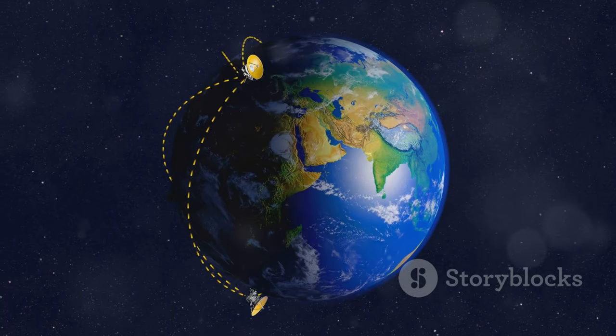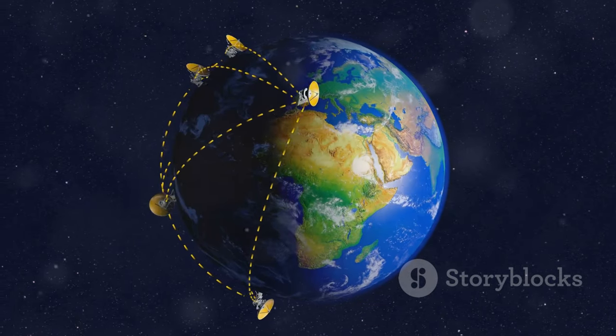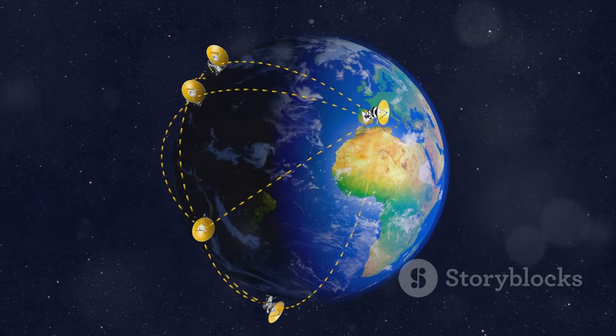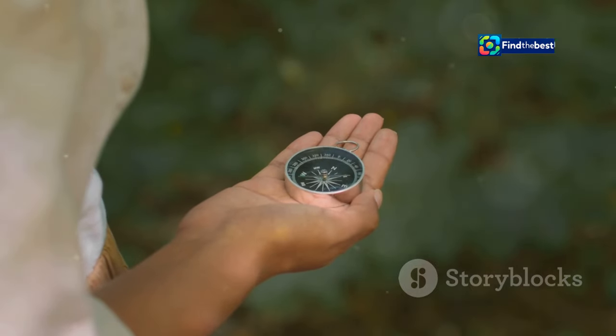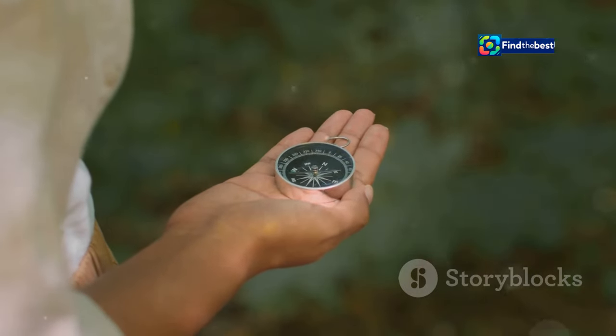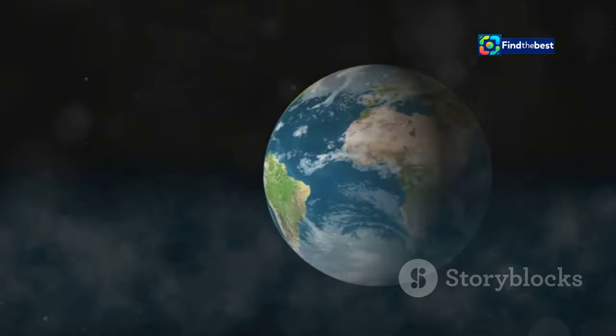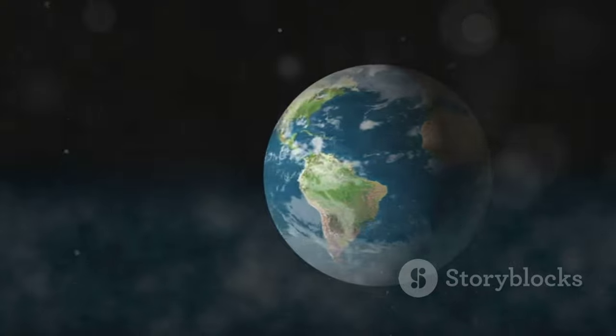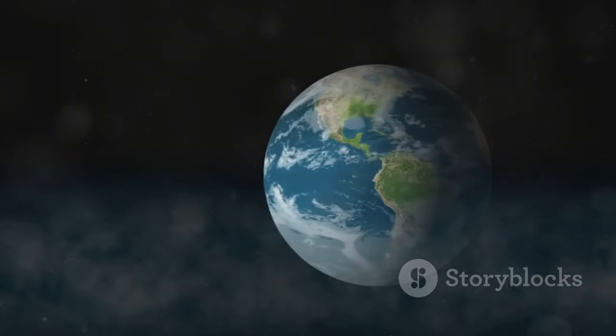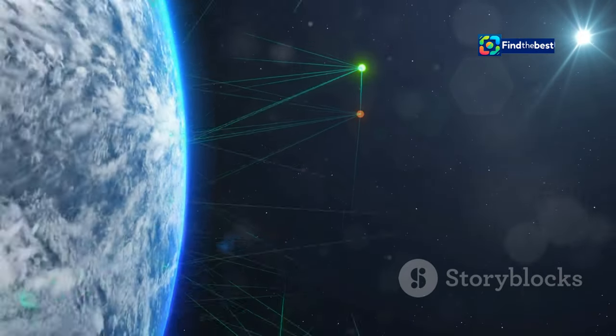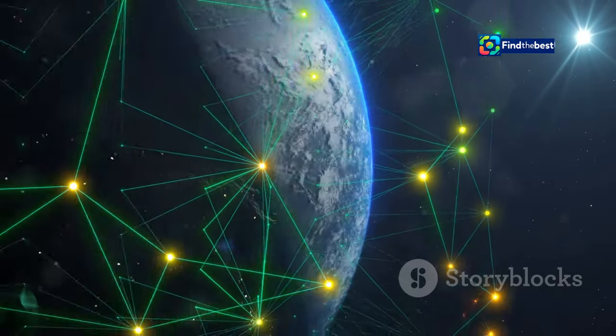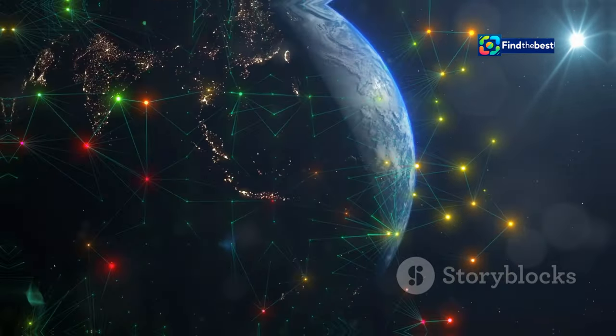The movement of the pole also impacts GPS systems, which use satellites to determine location. While GPS itself doesn't rely on the magnetic field, some systems use magnetic north as a backup in areas with weak satellite signals. The shifting magnetic north pole is a reminder that we live on a dynamic planet, highlighting the interconnectedness of Earth's systems and the importance of understanding the forces that shape our world.